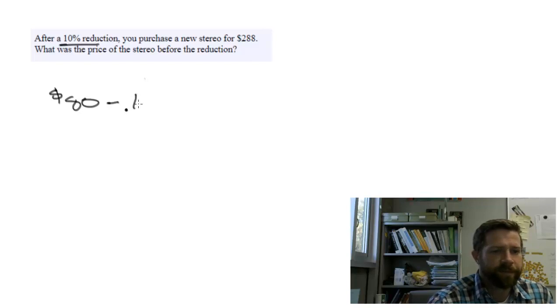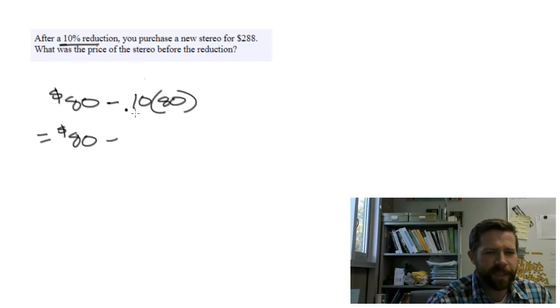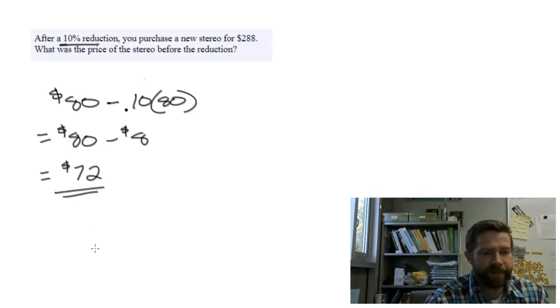So you would take 80 minus 10% of 80, which gives you $80 minus your discount. In this case, 10% of 80 is $8, giving us a discounted price of $72. That's the fundamental way, the easiest way to explain taking 10% off of something.